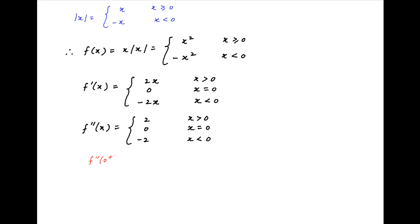Therefore, the value of f''(x) when x tends to 0 from the positive side is equal to 2, and the value of f''(x) when x tends to 0 from the negative side is equal to minus 2. Since these are unequal, therefore f''(x) does not exist at x is equal to 0.